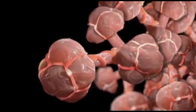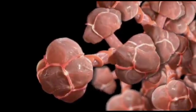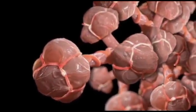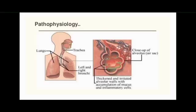The airways and alveoli are flexible. When you breathe in, each air sac inflates like a small balloon and deflates when you exhale. Small blood vessels called capillaries surround the alveoli; oxygen from the air you breathe passes into your capillaries, and carbon dioxide from your body passes out of the capillaries into the alveoli to be exhaled.